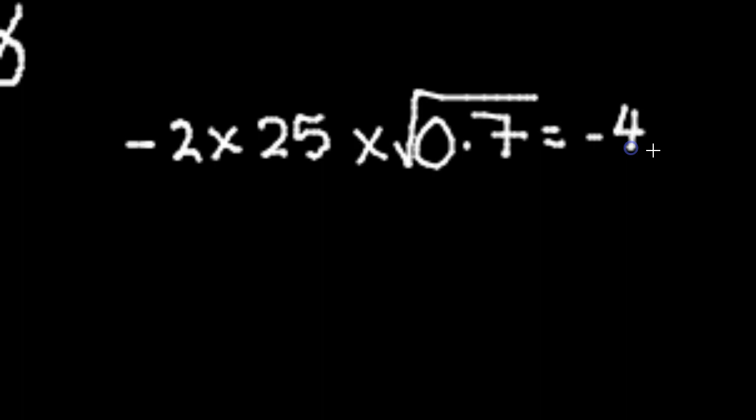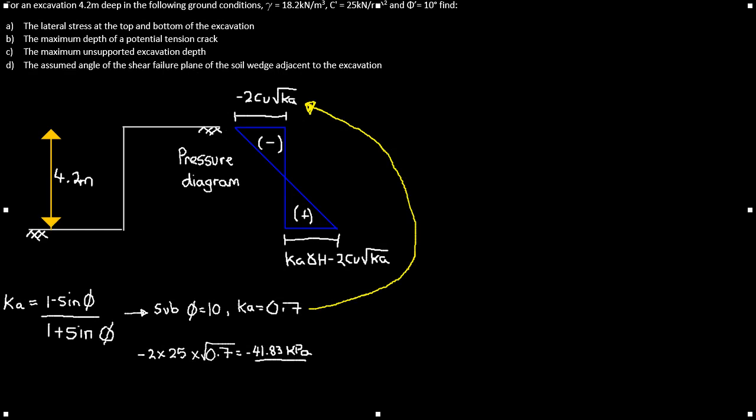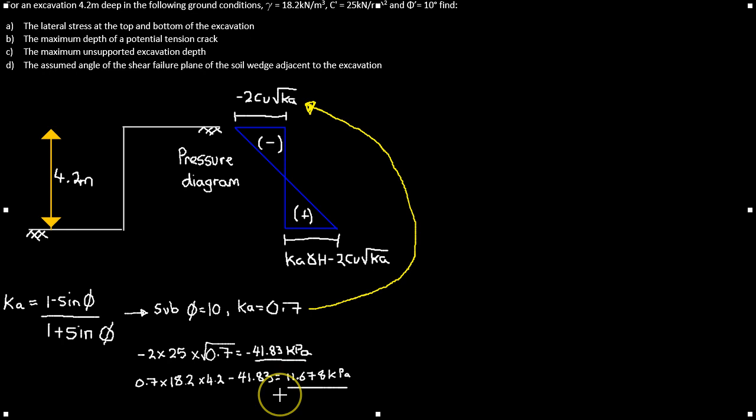At the bottom, we substitute values into the equation: 0.7 times 18.2 times 4.2 minus 41.83 (already calculated), which equals positive 11.678 kPa or kN/m².